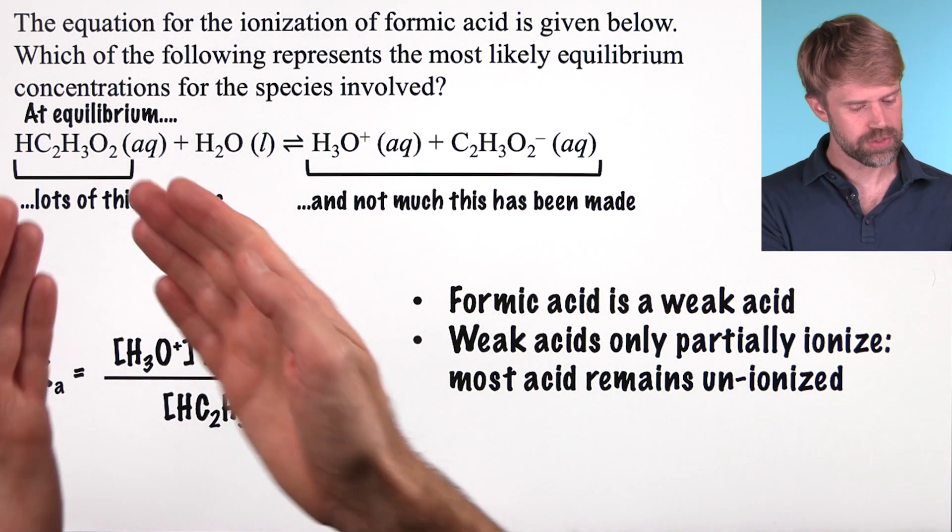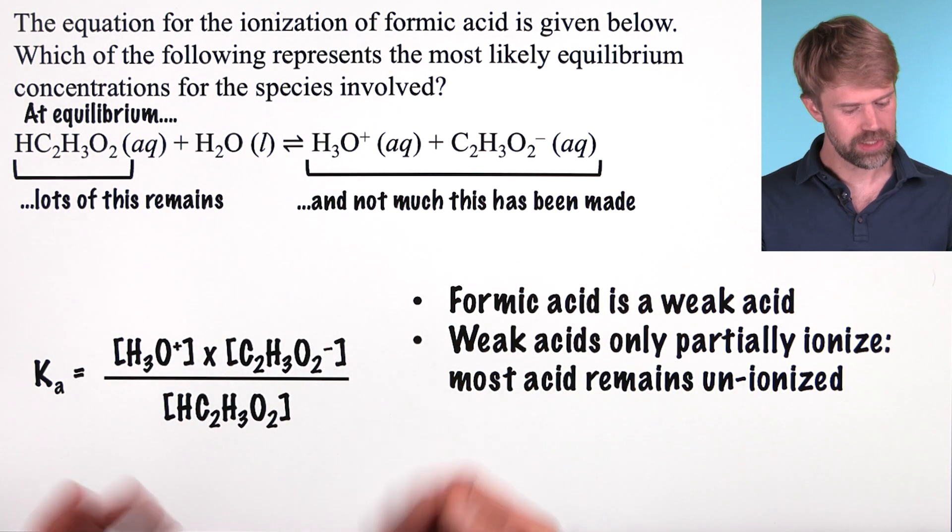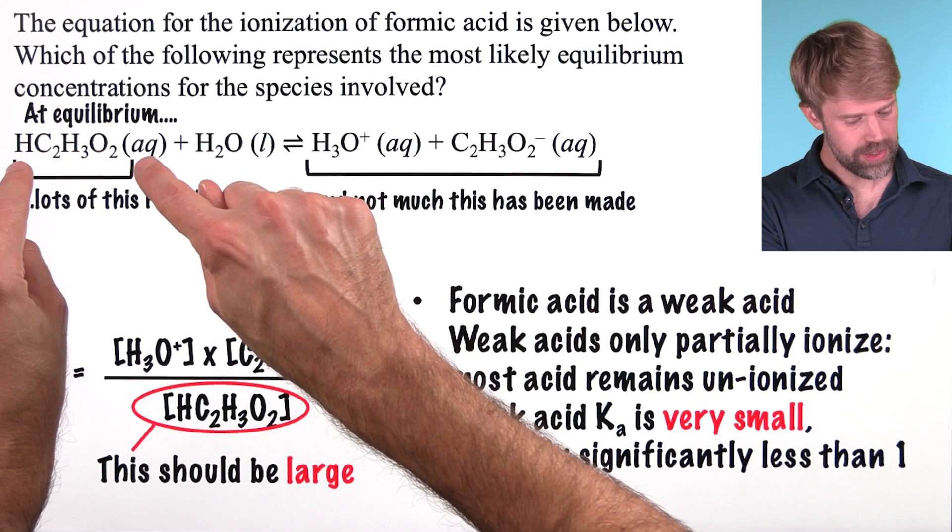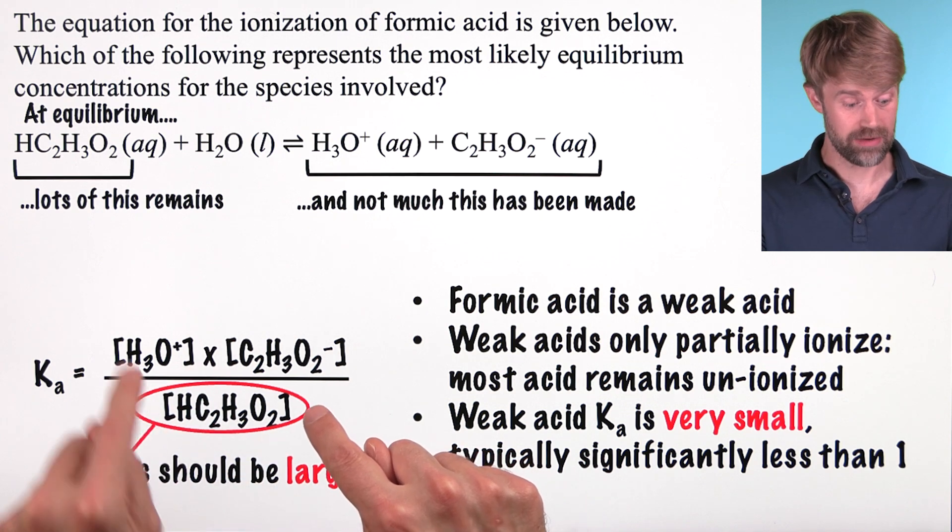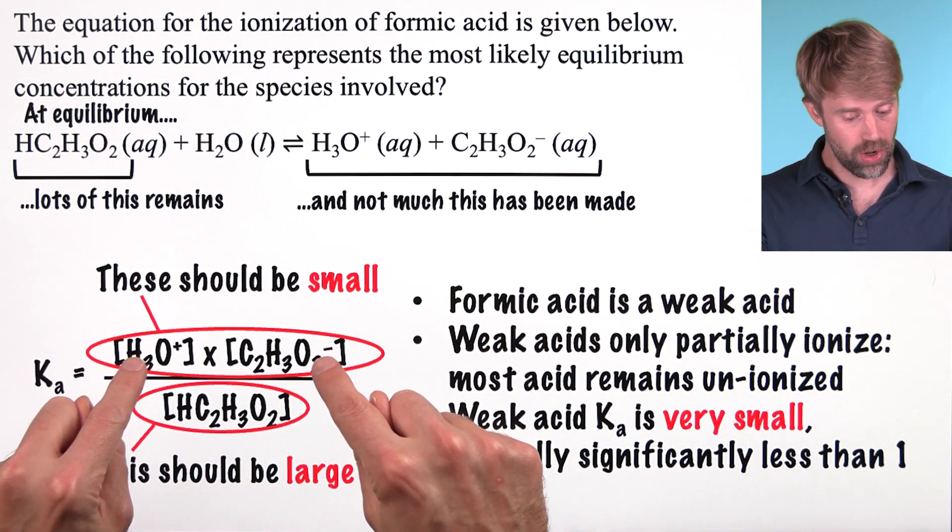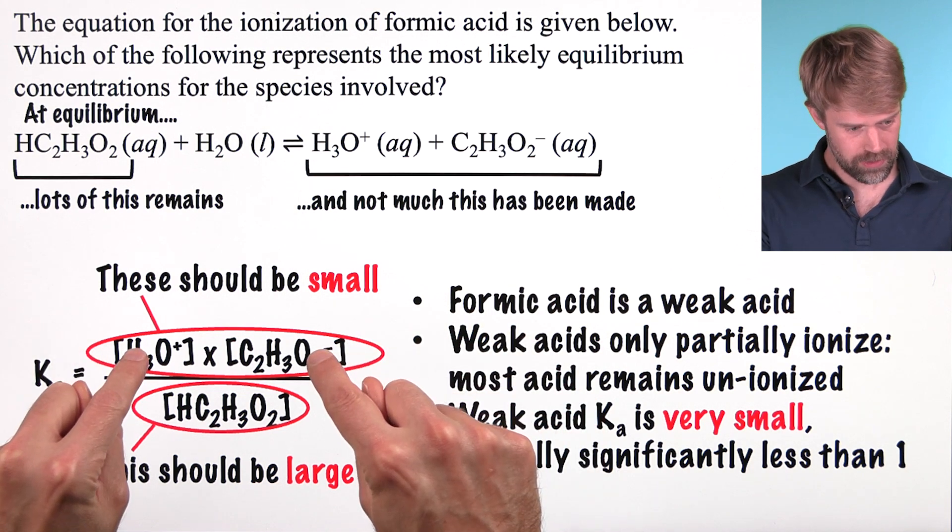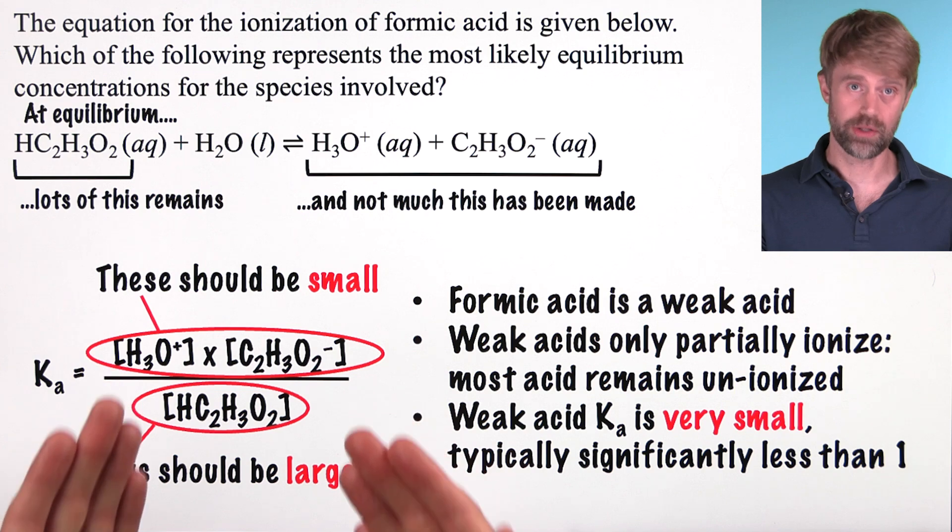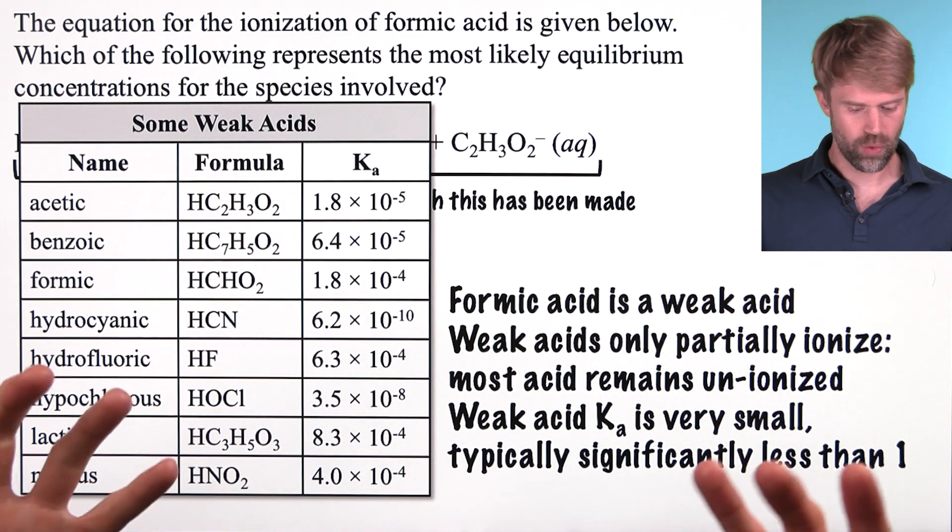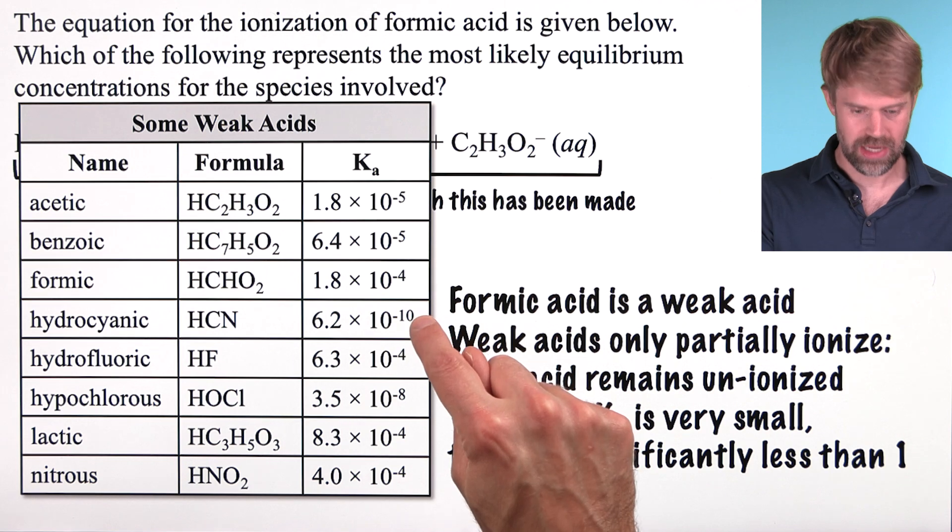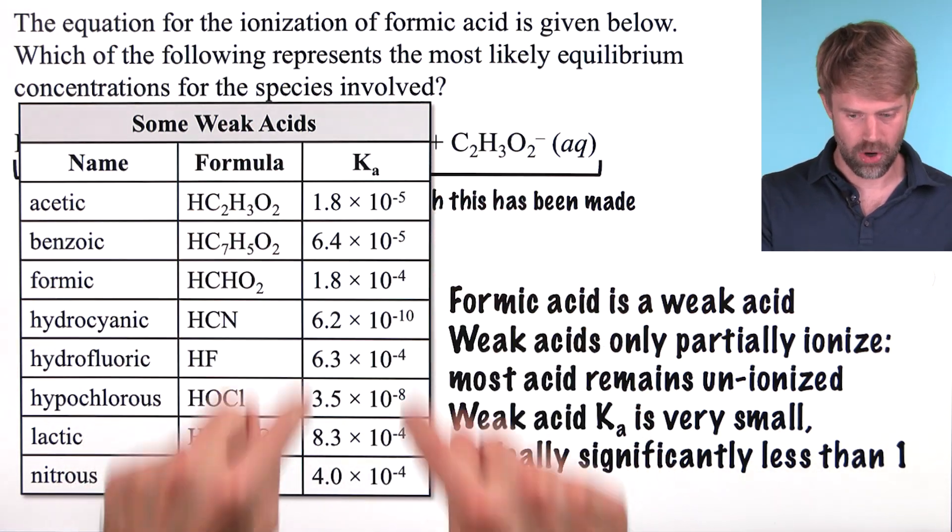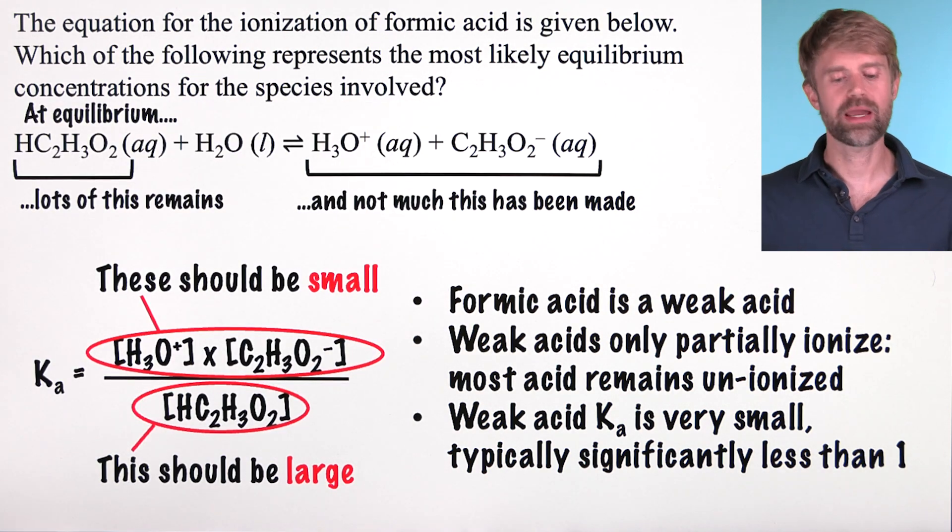We can express the balance between the concentration of this and the concentrations of these by using the Ka. For weak acid, the Ka is very small. And that's because your unionized acid is in the denominator and you have a lot of this remaining at equilibrium, so it's a large number. And you don't have much of these, so you've got these small numbers in the numerator. Divide some small numbers by a large number and you get a really small number. How small? Usually significantly less than one. Weak acids tend to have Ka's on the order of 10 to the negative 5th, 10 to the negative 4th, 10 to the negative 10th. No, it doesn't make sense for you to memorize this list. But you should know that Ka's for weak acids are small. Really small.